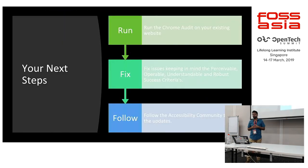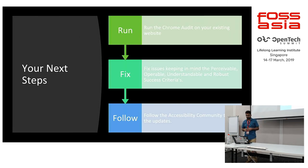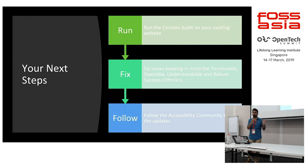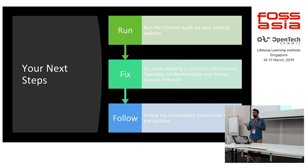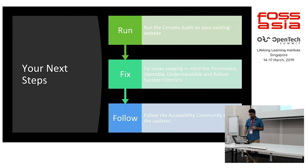What are your next steps? Whatever you are designing or have already designed, go through three steps: Run, Fix, and Follow. Run a Chrome Audit today, fix whatever issues come up in terms of Perceivable, Operable, Understandable, and Robust. Finally, follow communities like the Accessible Community, Google Groups, or GitHub, and see what issues they are working on. If you want to collaborate or discuss, you can do that as well.